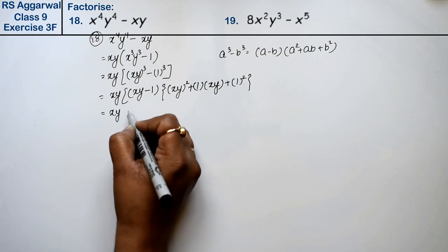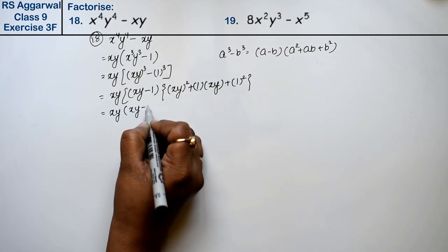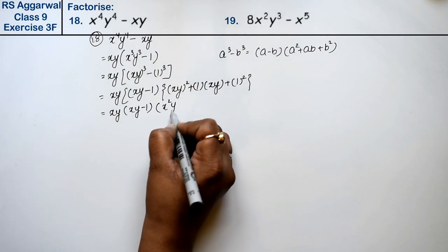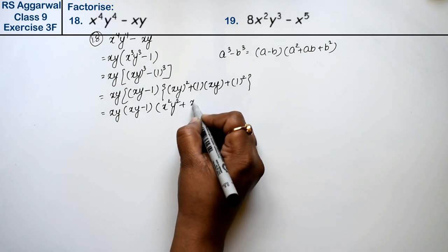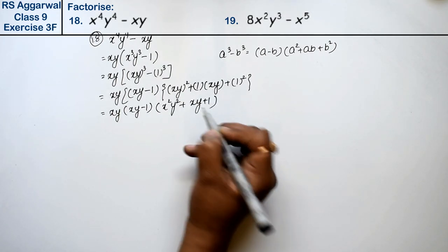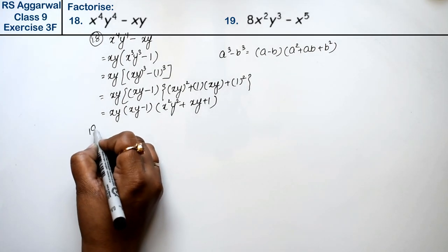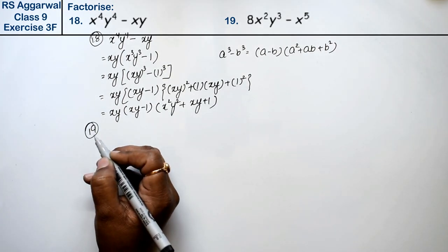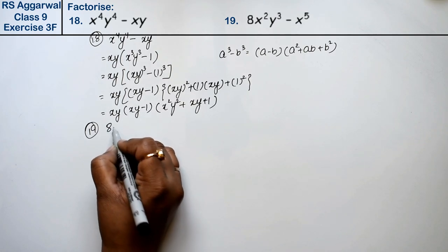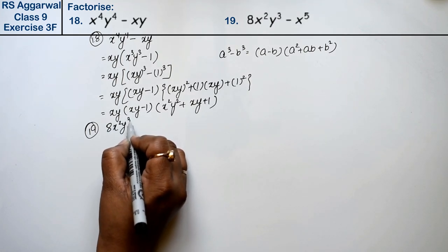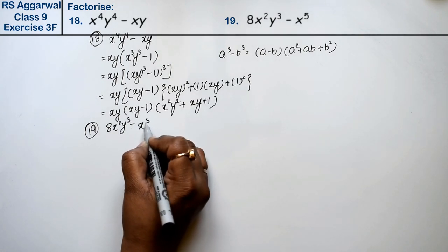So xy minus 1 and x square y square plus xy plus 1 is the answer. Let's do question number 19. Question number 19 is 8x square y cube minus x to the power 5.